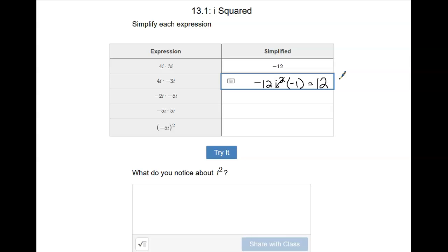Let's see what happens with the next one. We have negative 2i times negative 5i. So negative 2 times negative 5 is positive 10, and i times i is i squared. Well, we said that multiplying times i squared is the same thing as multiplying times negative 1. So 10 times negative 1 would be negative 10.